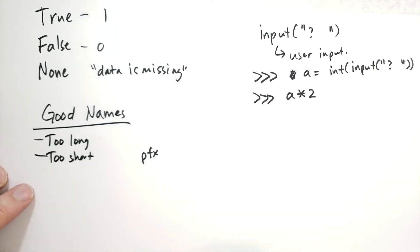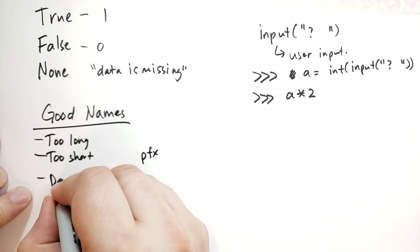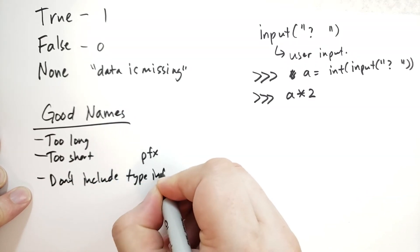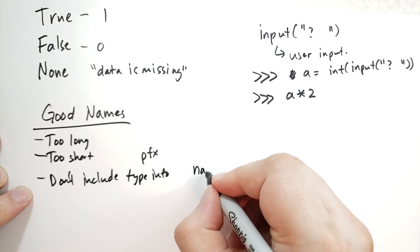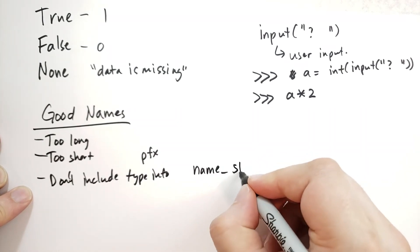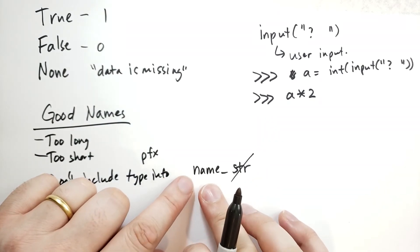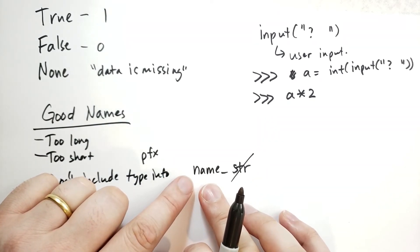You don't typically include type information. For instance, don't use name underscore str. Don't put that str in there. Especially because we know that the name is supposed to be a string.